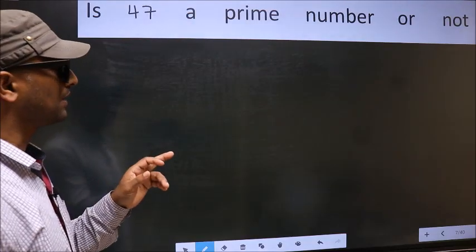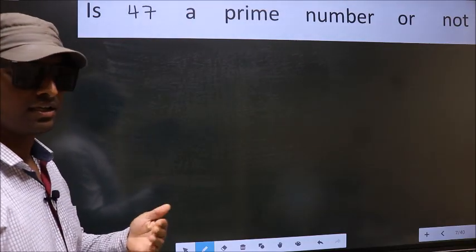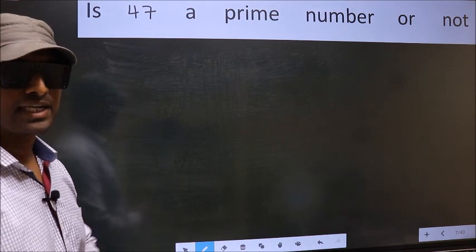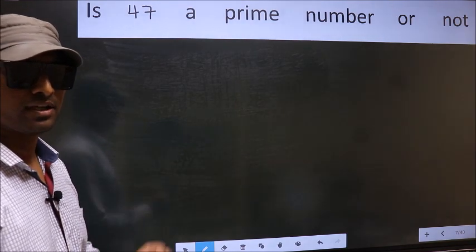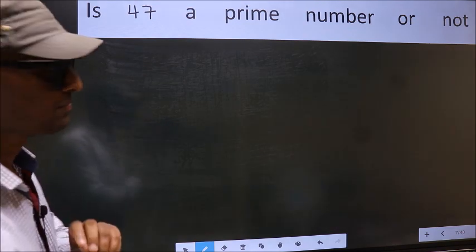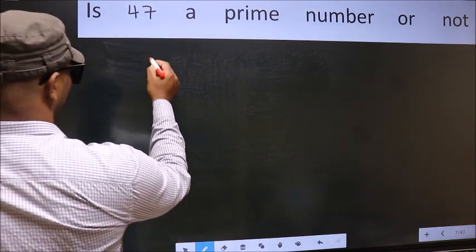Is 47 a prime number or not? To check whether the given number is prime or not. For that, step 1: Given number is 47.